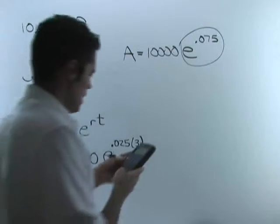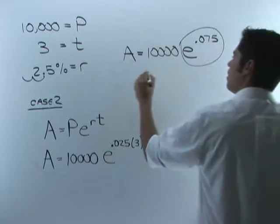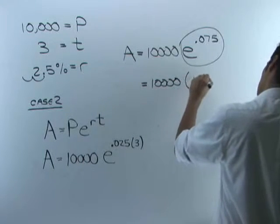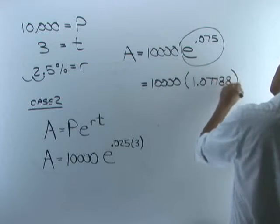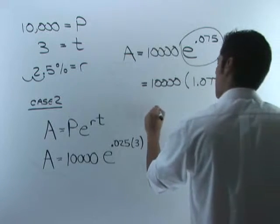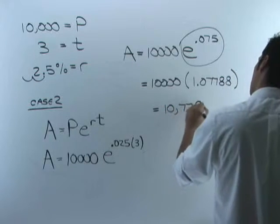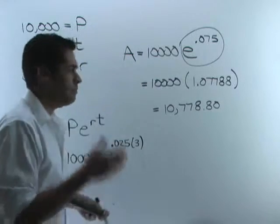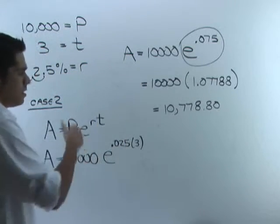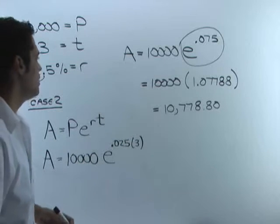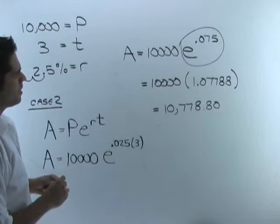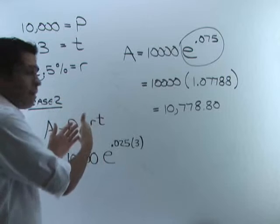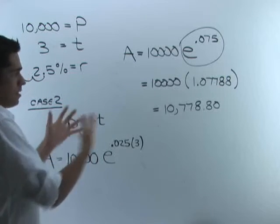On the calculator, compute 0.025 times 3 to get 0.075, then find e to the 0.075 before multiplying by 10,000. That gives 10,000 times 1.07788, which equals $10,778.80. Comparing the two cases — compounded monthly gave $10,777.90 and continuously compounded gives $10,778.80 — the difference is less than a dollar. In these problems, you'll be told whether it's compounded a certain number of times per year or compounded continuously, and those are the two different cases.